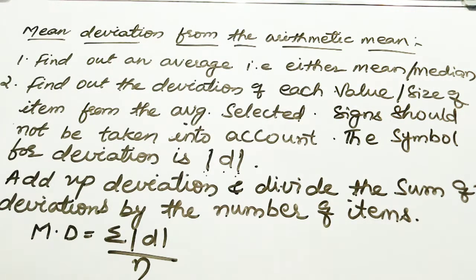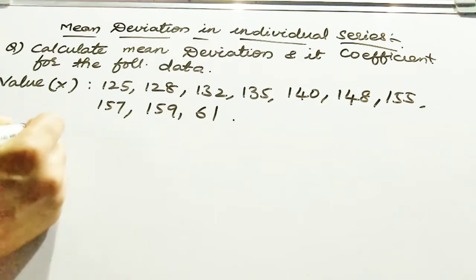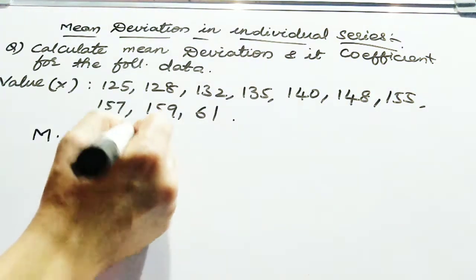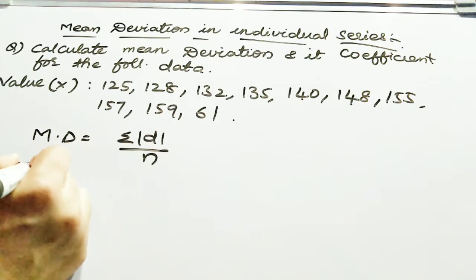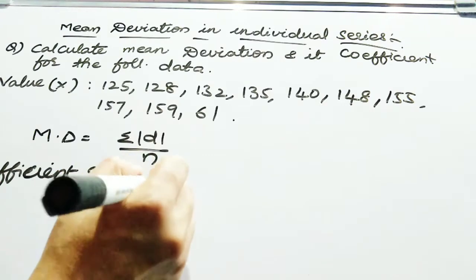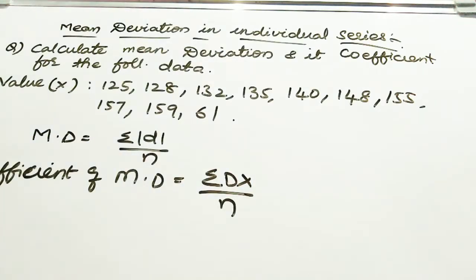Today we are going to discuss how to find mean deviation in individual series. Our problem is to find mean deviation in individual series — calculate mean deviation and its coefficient for the following data. In individual series, a list of data items will be given and you have to find mean deviation. The formula for mean deviation is summation mod D by N, and the formula for coefficient of mean deviation is summation dx by N.